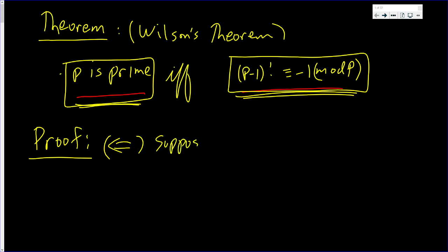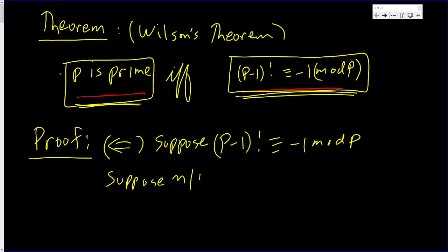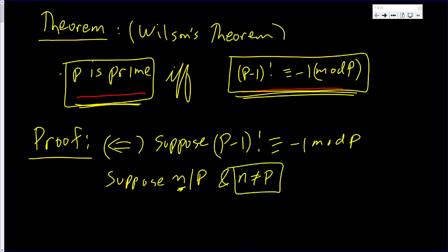Let us suppose p minus 1 factorial is congruent to negative 1 mod p. Now, suppose that n divides p, but n is not p. We want to show that n is 1 — that the only divisor of p which is not p itself must be 1.